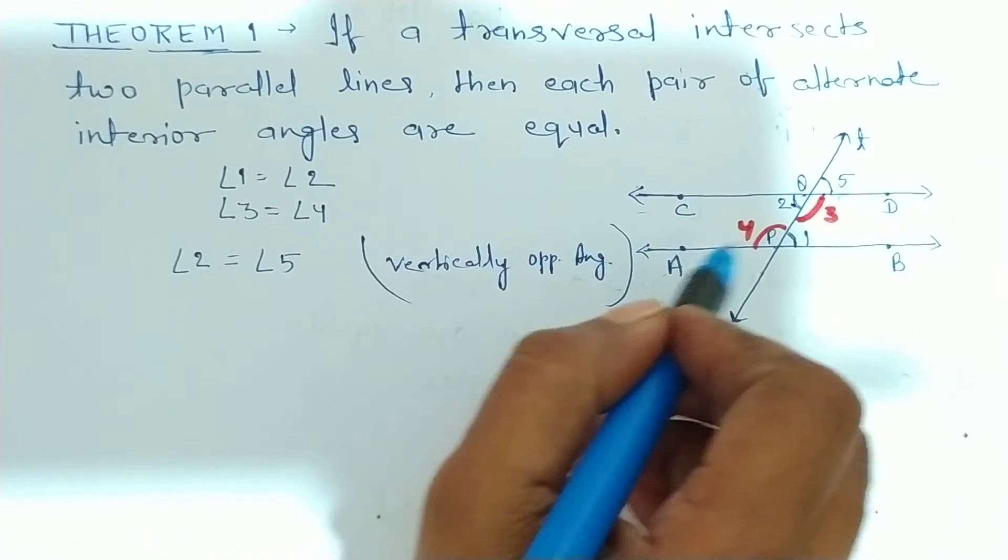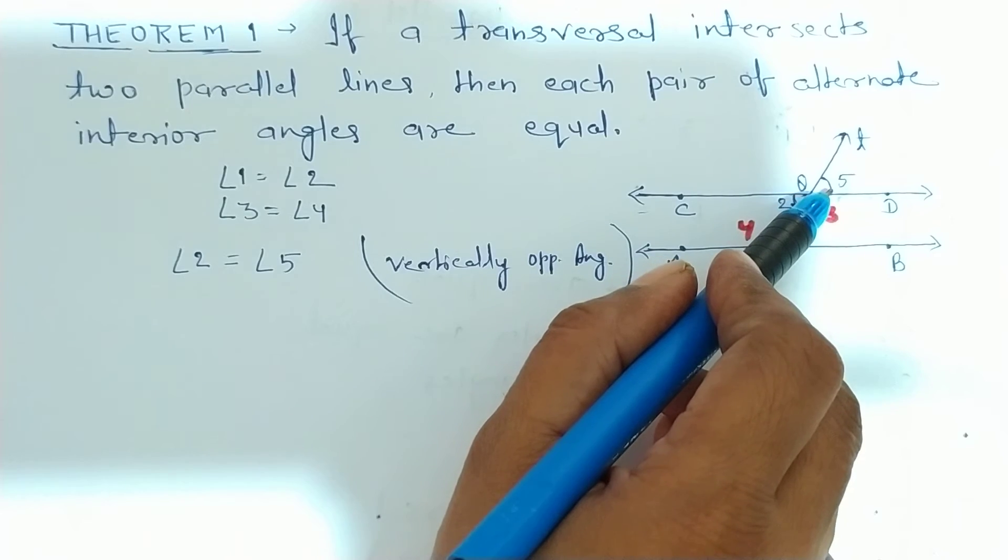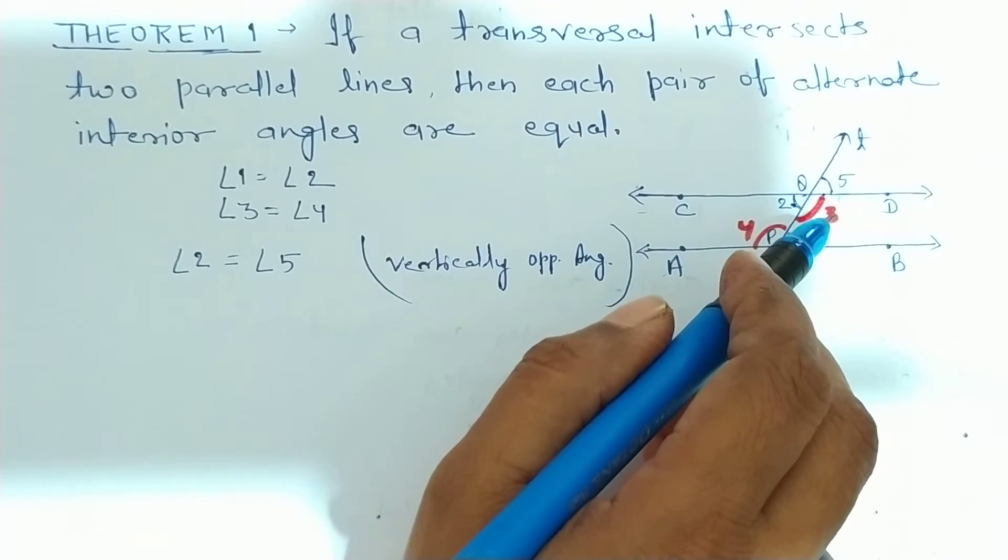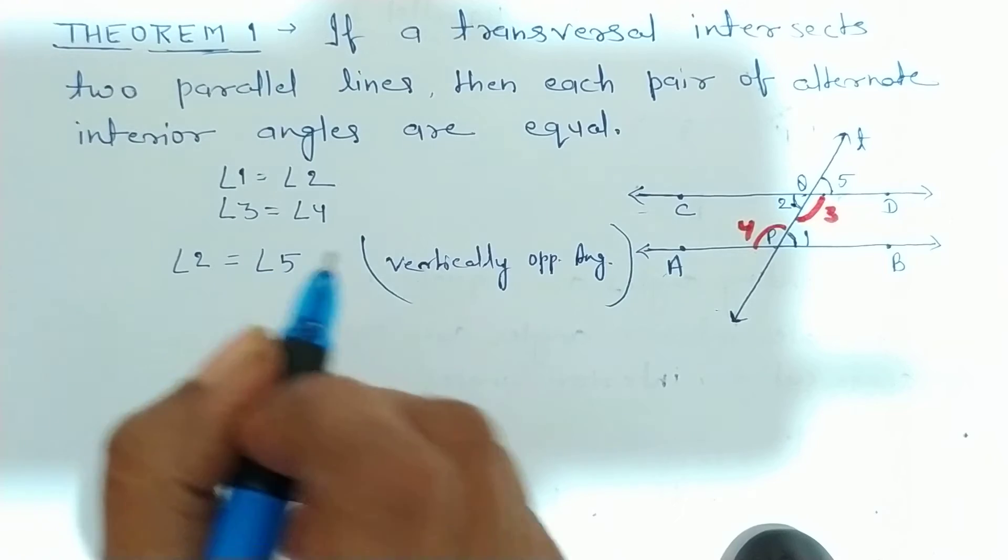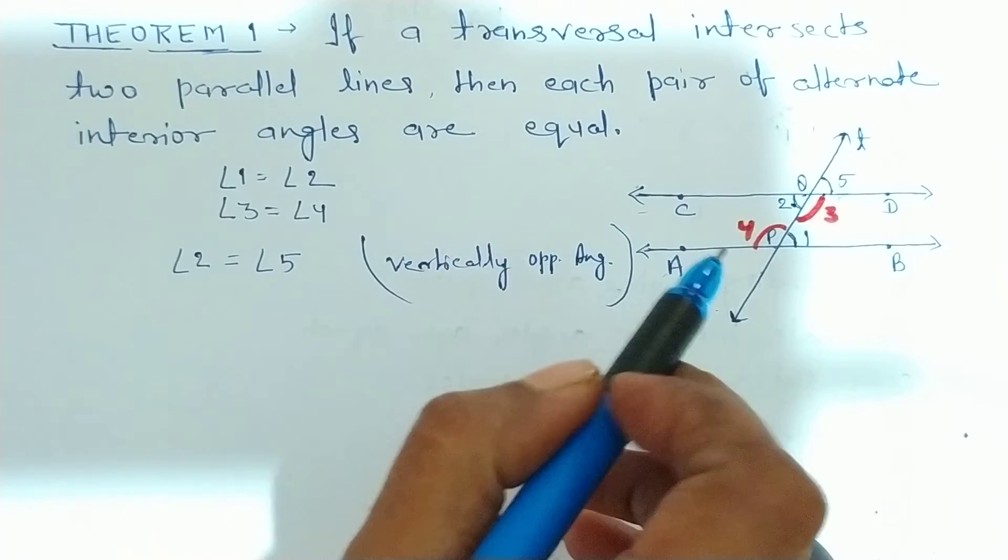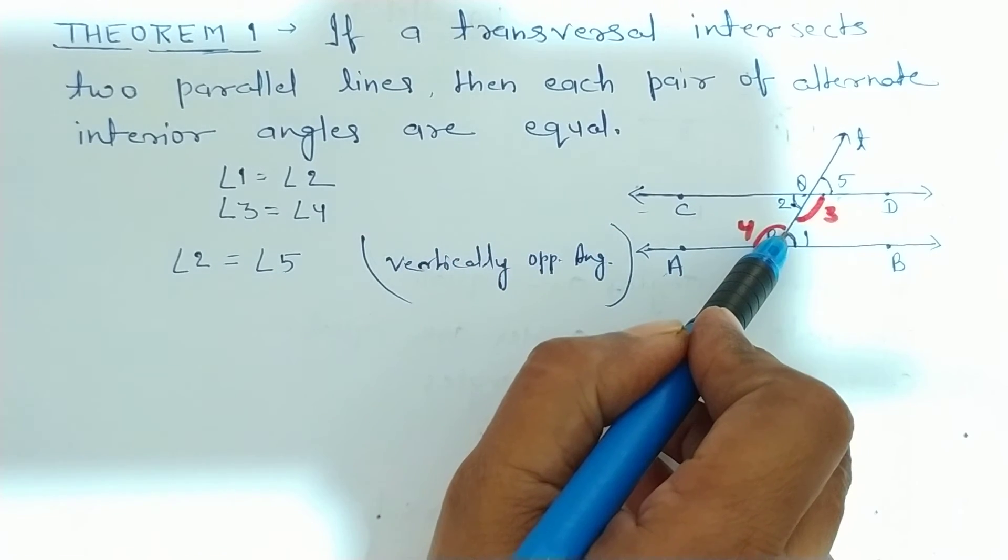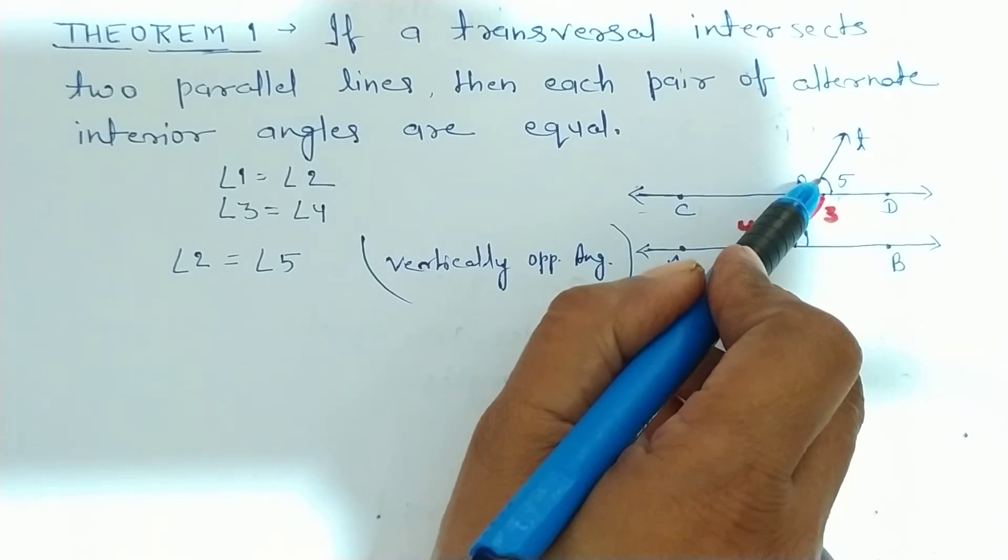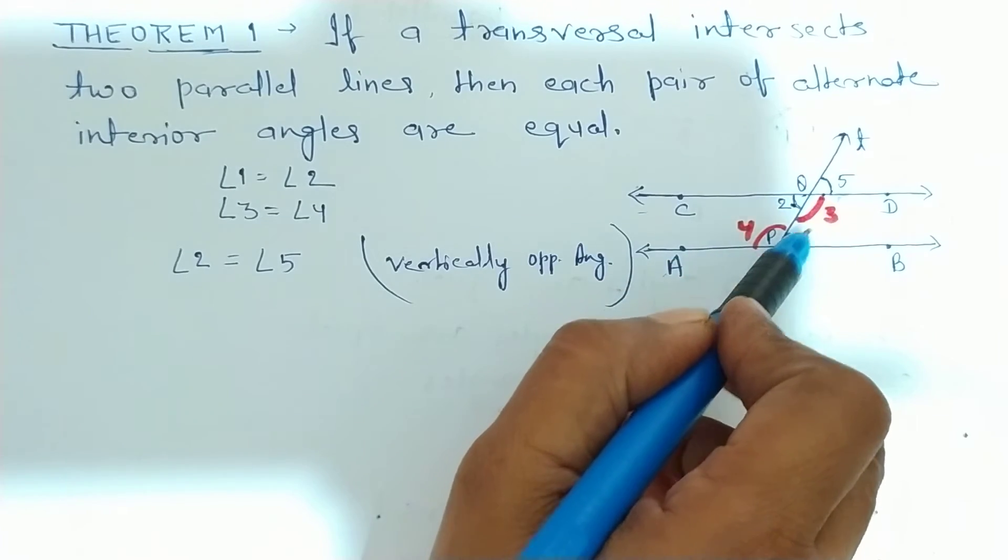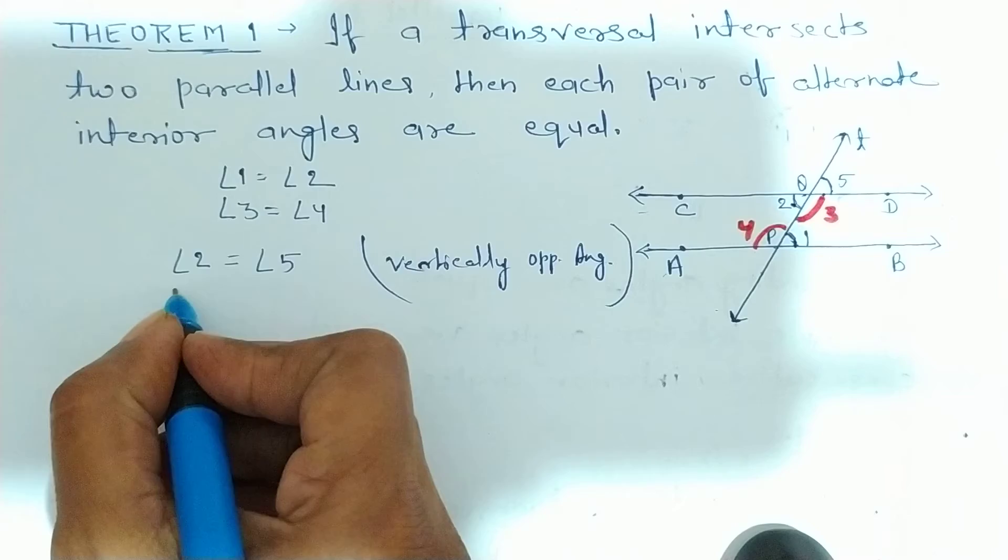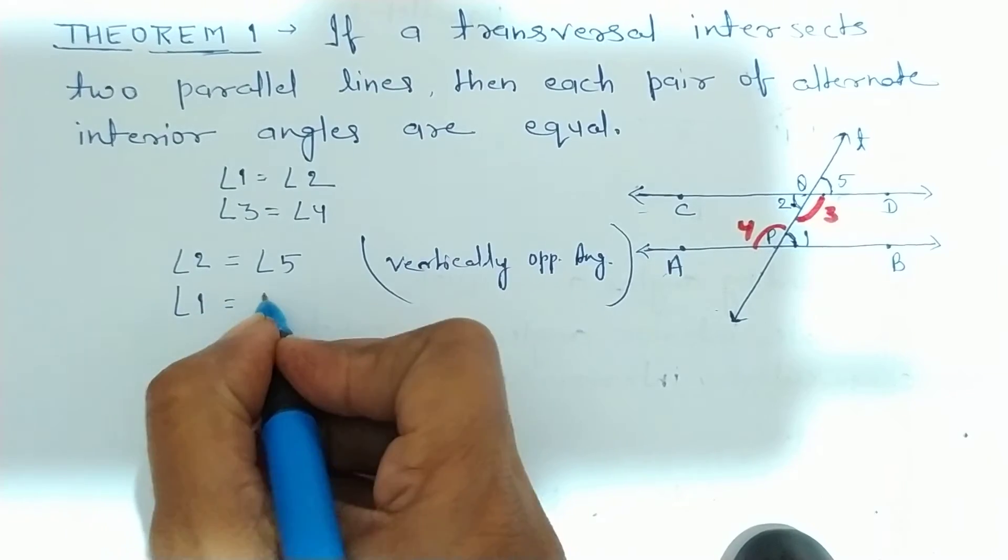Next hai, angle 1 equal to angle 5. Jo humne corresponding angles axiom padha tha. Iske pehle wale wale video mein uske according pair of corresponding angles are equal. Therefore, angle 1 is equal to angle 5. Angle 1 equal to angle 5.